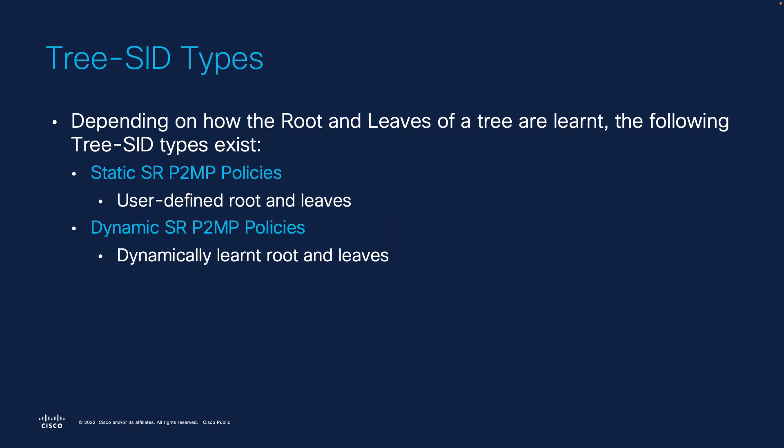To sum up, there are two types of tree seeds: dynamic and static. They differ on the way their roots and leaves are defined. Static are usually defined by the operator, while dynamic are dynamically defined by the controller.